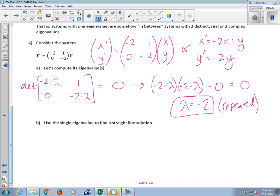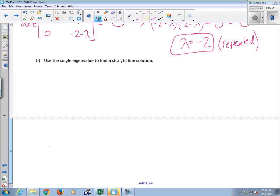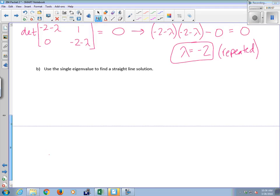Straight line solutions were based on the lambda value and the associated eigenvector. The problem here is that we only have one straight line solution, but let's find it anyway. I need to find the eigenvector associated with lambda equals negative 2. We need to solve AV equals lambda V, where V is my eigenvector, X, Y.